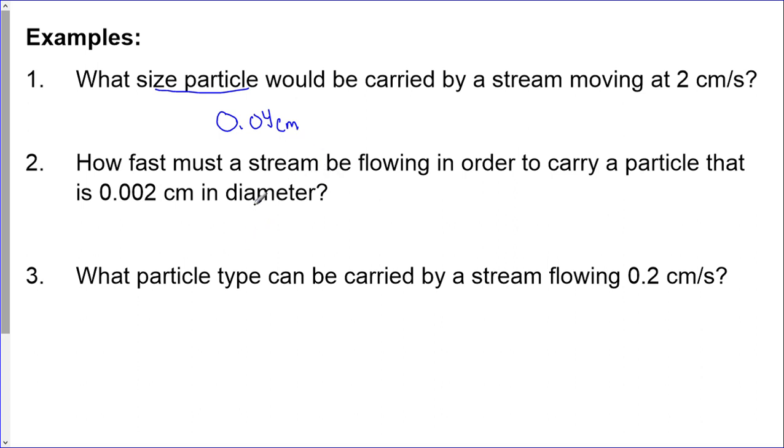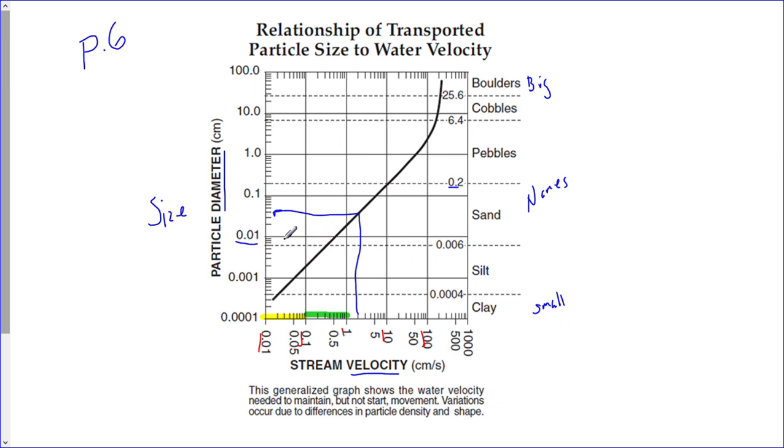Next, how fast must the stream be flowing in order to carry a particle that is 0.002 centimeters in diameter? So 0.002, now we have to come over here. So we'll have a particle size 0.001, so 0.002 is going to be here. Now I'm going to come over, I hit the graph right there, and now I want the speed, the velocity, so I'm going to go straight down. So my speed is 0.1 centimeters per second.